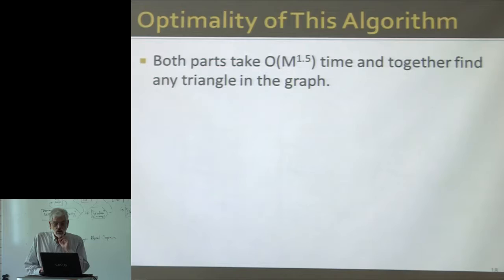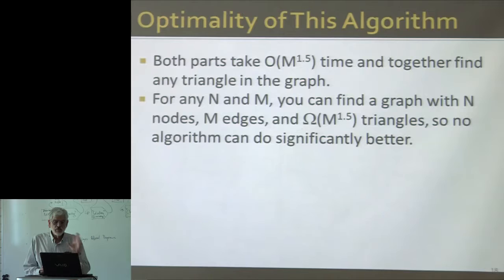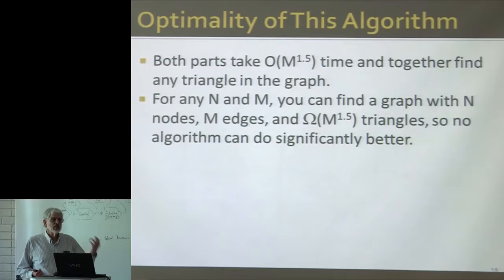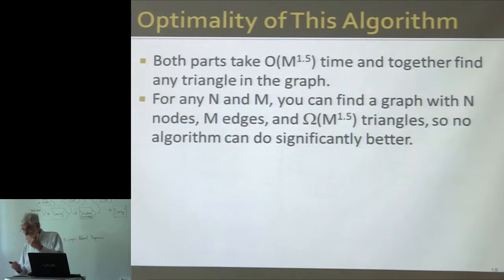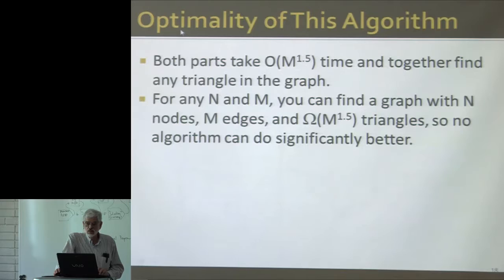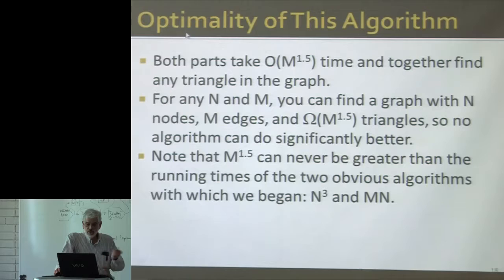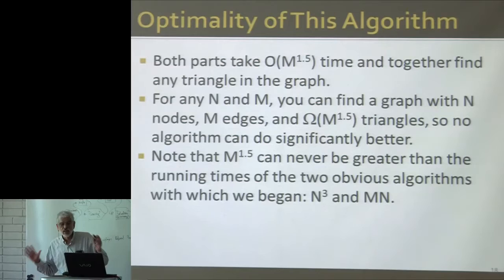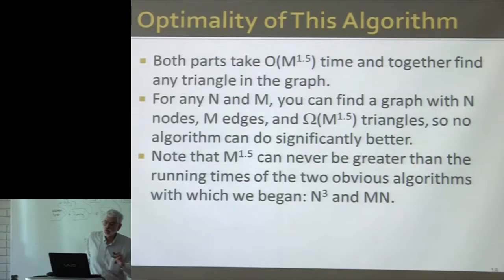I'm not going to just claim it's optimal. It turns out that for more or less any N and M, you can always find a graph that has N nodes and M edges and actually has as many as M to the 1.5 triangles. You presumably can't count the triangles without actually finding each one. So you can't do better than M to the 1.5. And since M can't be bigger than N squared and is usually much less than N squared, M to the 1.5 is significantly less than both N cubed and even N times N.